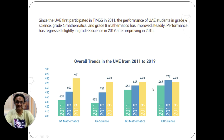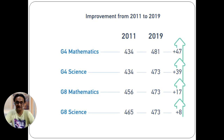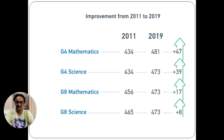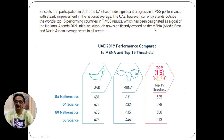You must know this statistical data showing how the UAE has been performing from 2007 to 2019. As you can see, there is clear improvement from 2011 to 2019 — with gains of 47%, 39%, 17%, and 8% at different grade levels. These results are leading toward the national agenda goals, and we are now waiting for the 2023 results.